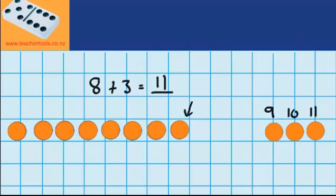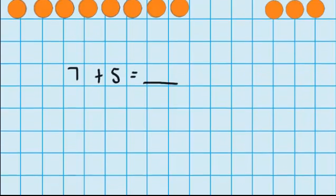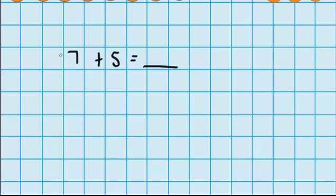Now let's see if we can try one without the counters. Let's imagine I've got seven counters, and I want to add five more counters. So I'm trying to work out how much I have in total. Well just like last time, I'm trying to imagine seven counters in my head.